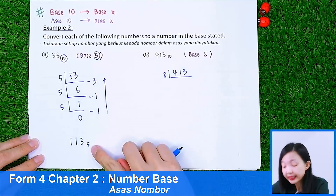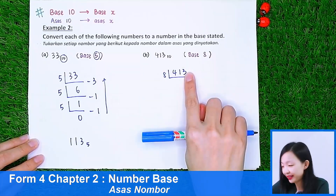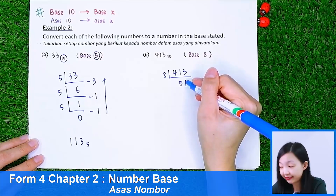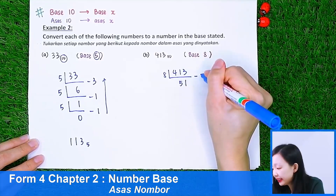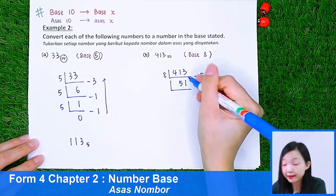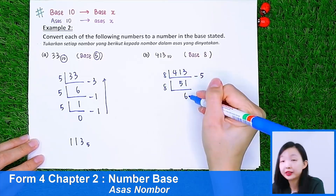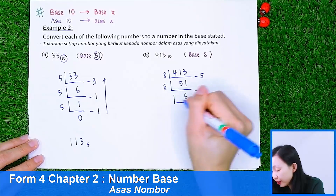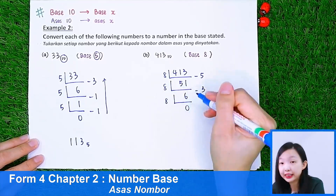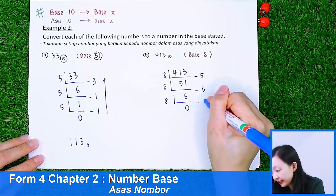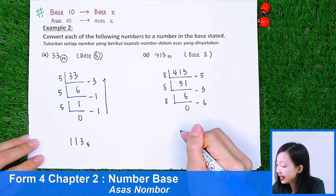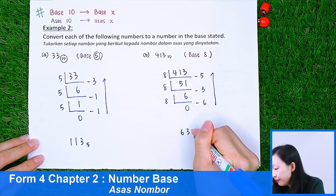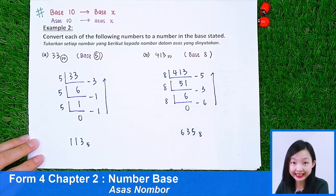Let us go to part B. We have 413, and we want base 8, so we divide by 8. 8 times 51 gives 408, so the remainder is 5. Continue dividing by 8: 8 times 6 is 48, remainder 3. Continue dividing by 8: 8 times 0 is 0, remainder 6. Reading from bottom to top, the final answer is 6, 3, 5 in base 8.